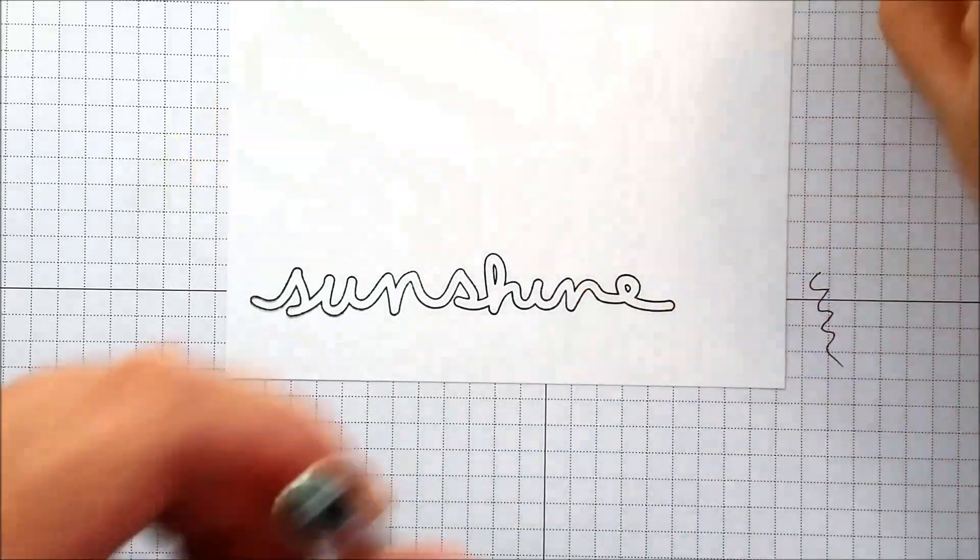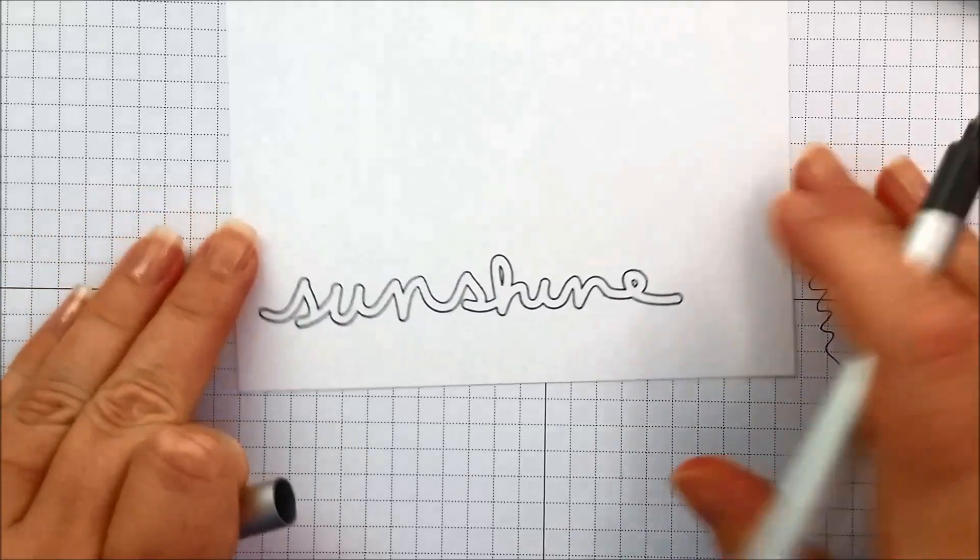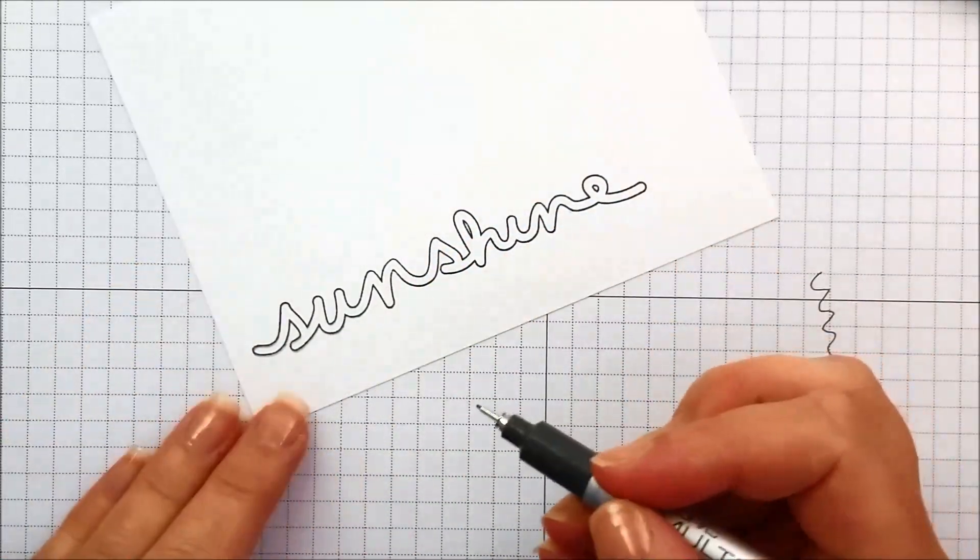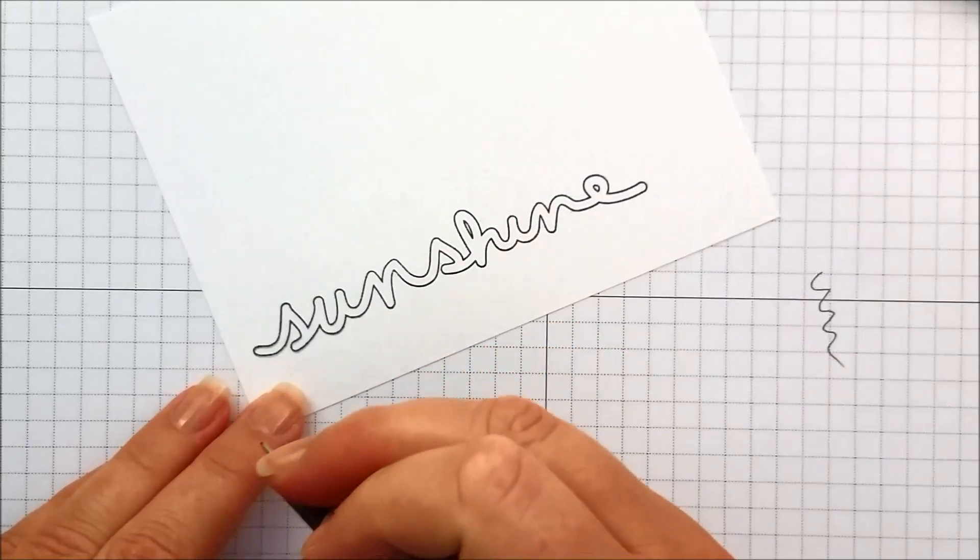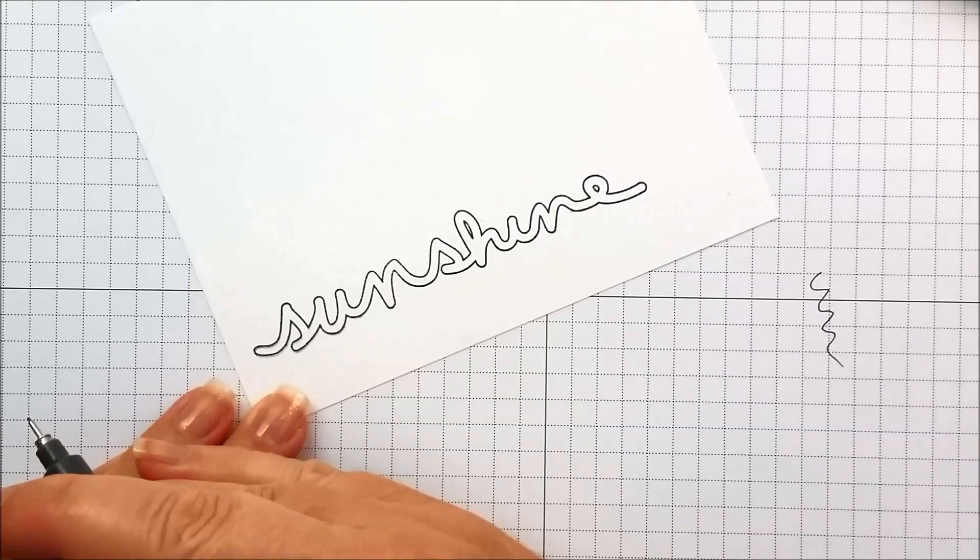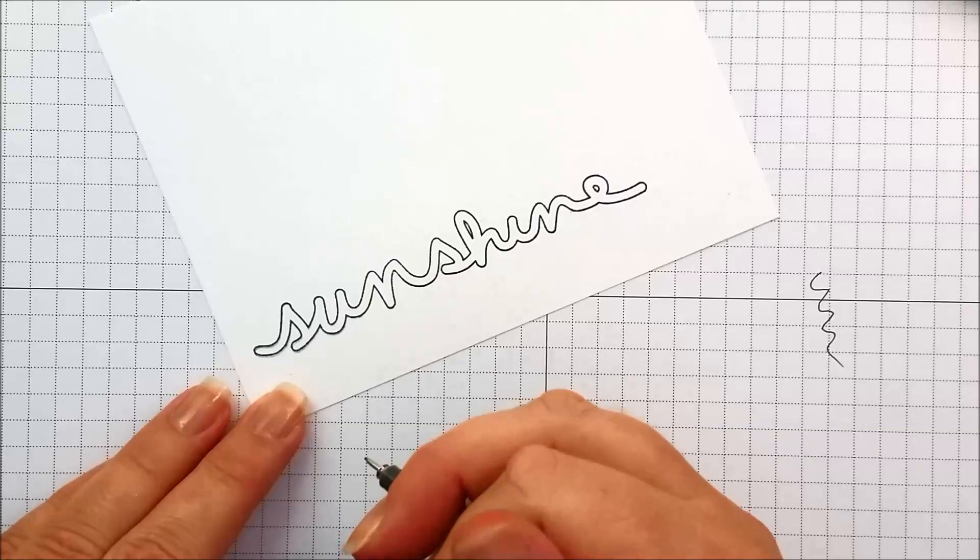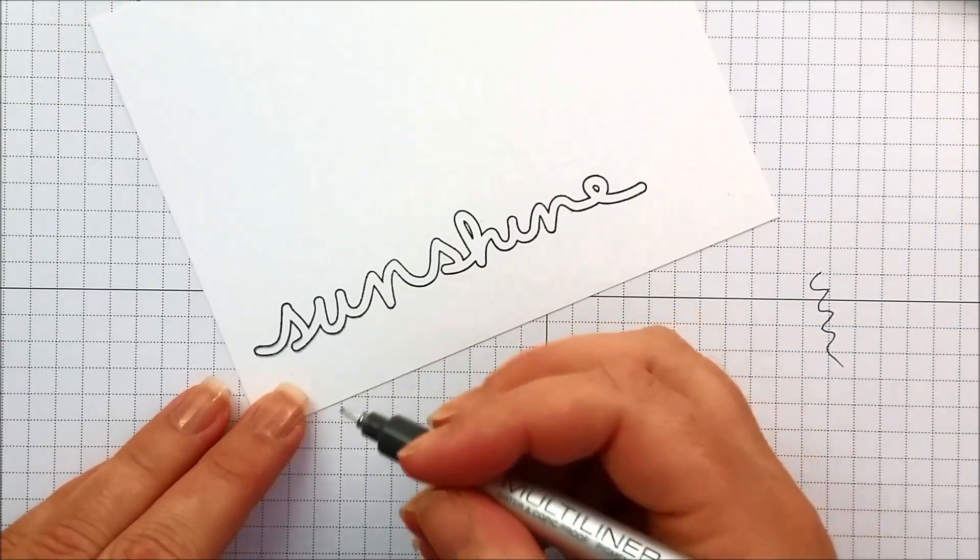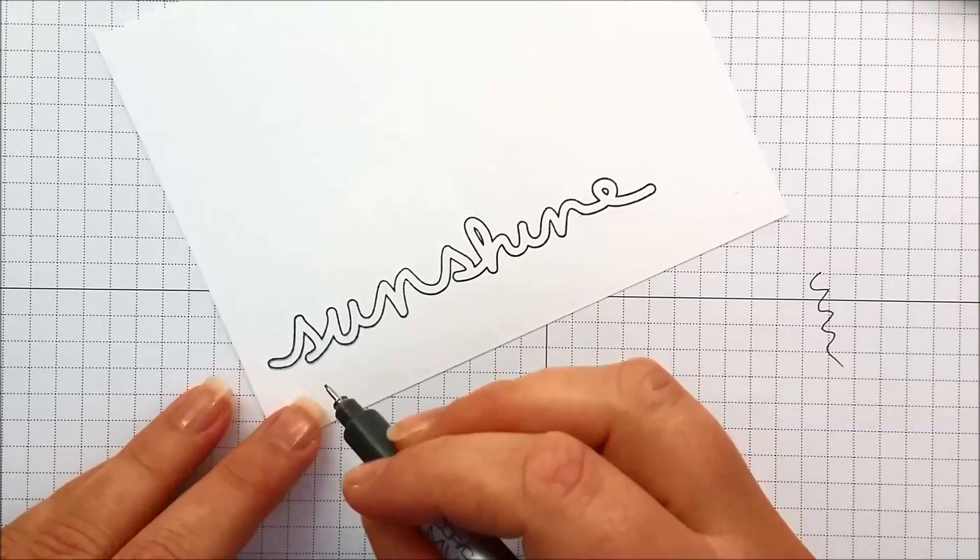So let's do some fun patterns using our multiliners. I'm going to use a 0.25 tip. You can do all kinds of polka dots and stripes and whatever you'd like inside. You could do little mini suns which would be kind of cute. I'm going to doodle and I'm going to fast forward through this for you.